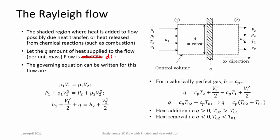The flow is diabatic — that is, it allows heat transfer to happen. The governing equations: the mass flow rate through the system remains constant, so ρ₁V₁ = ρ₂V₂ (area is the same). Then P₁ + ρ₁V₁² = P₂ + ρ₂V₂² — here we are considering frictionless flow, so frictional factors are not in the picture, meaning momentum is conserved. What about total enthalpy? h₁ + V₁²/2 plus a heat-added term Q — that is total heat added divided by ṁ, per unit mass — so Q = h₂ + V₂²/2.